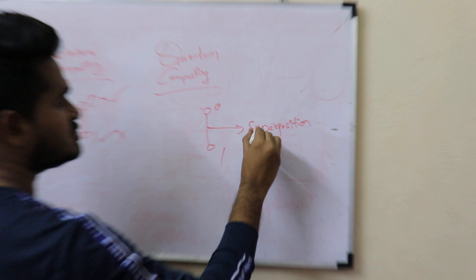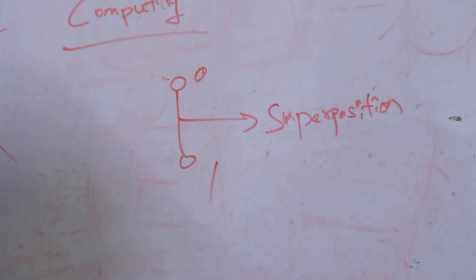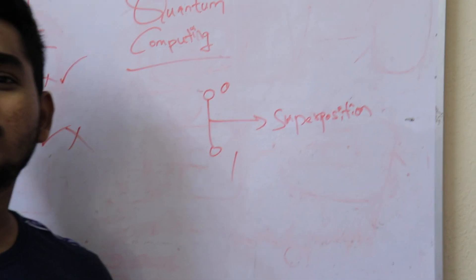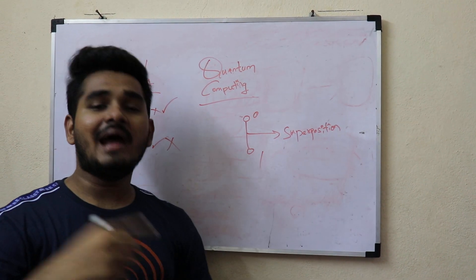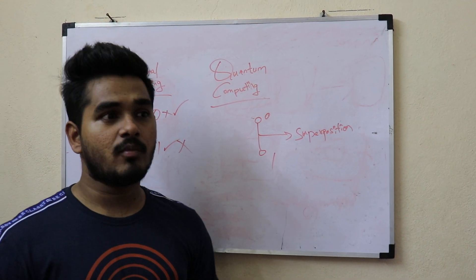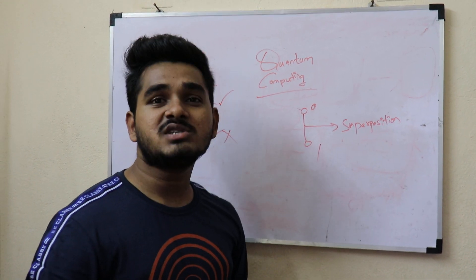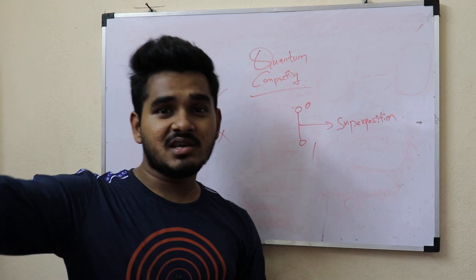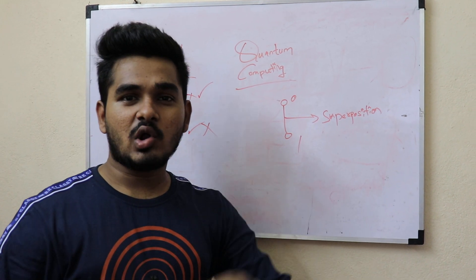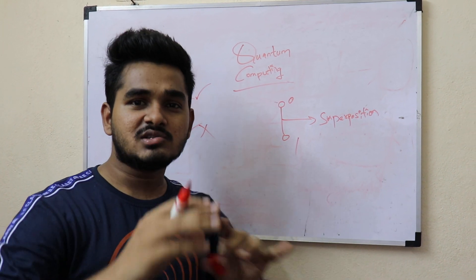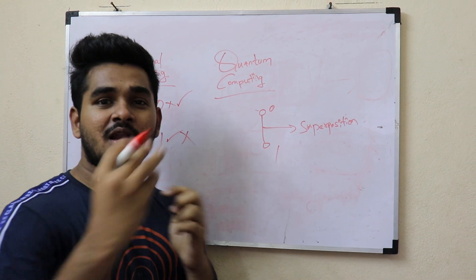Superposition is the key concept in quantum computing. It is like when you toss a coin, while it is in the air it is both heads and tails at the same time. You don't know what it actually is until it lands — quantum computing works the same way.